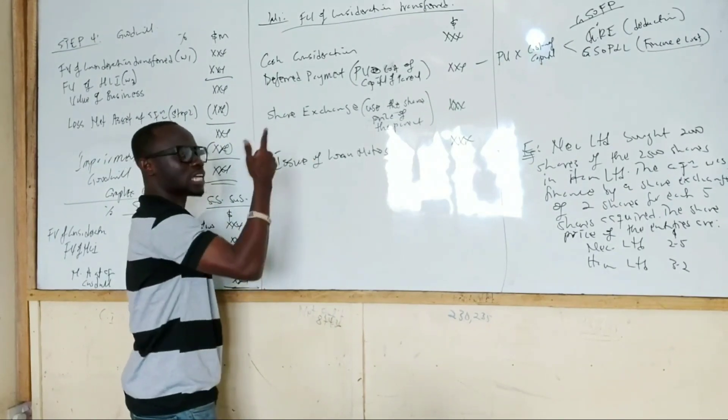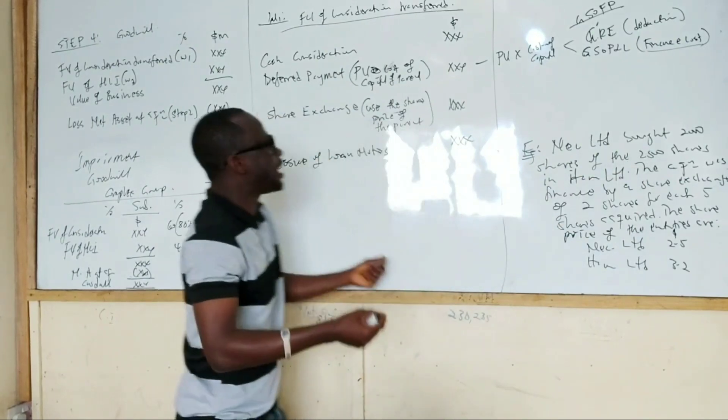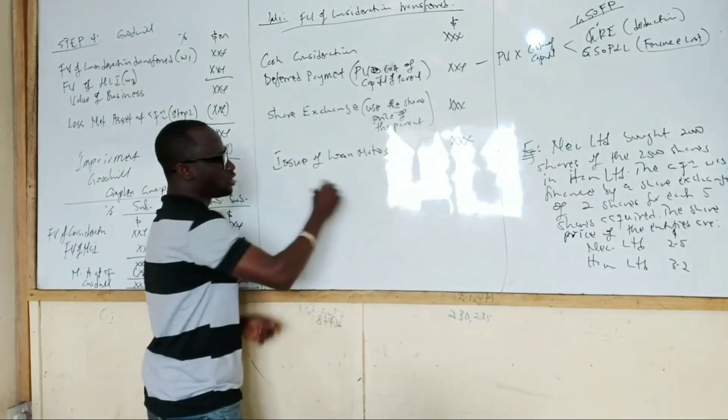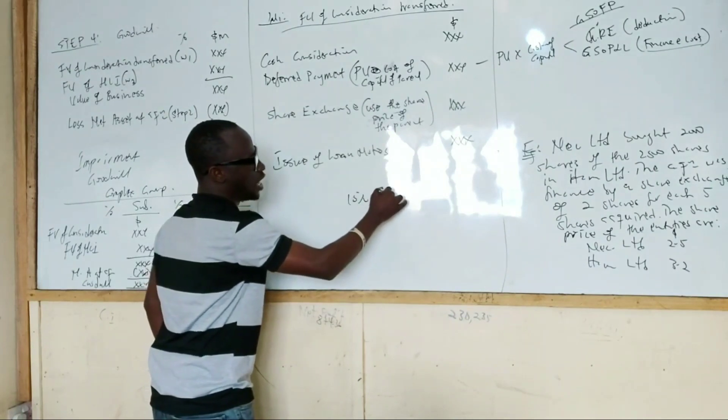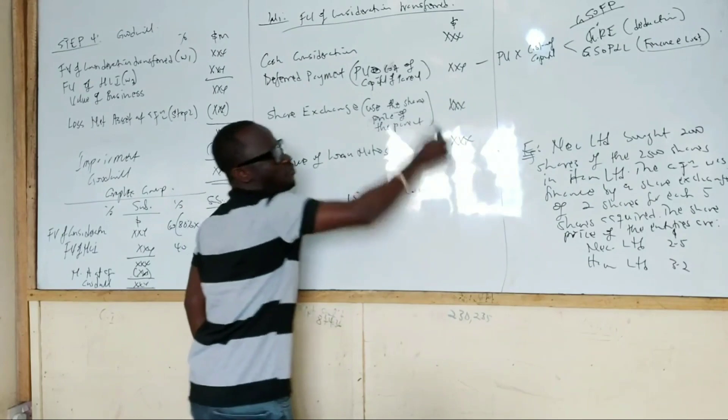So that one also, sometimes, it will be calculated just like the share exchange. So the examiner could tell you that they issue 10% loan, $100 loan notes for every five shares acquired.